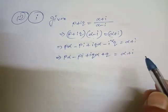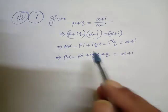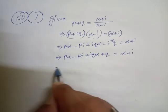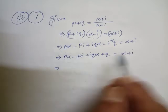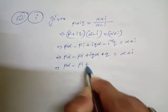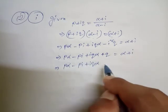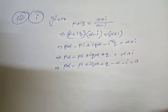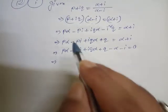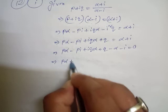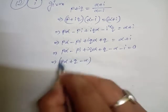Now the parts containing i are the imaginary part, and the other parts are the real part. If we rearrange and move everything to one side: pα - pi + iqα + q - α - i = 0. Separating, the real part is: pα + q - α.